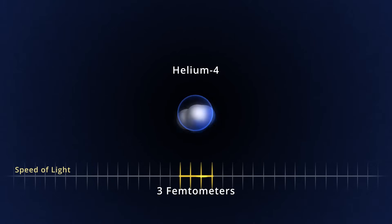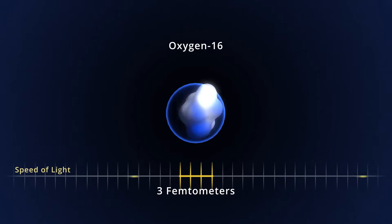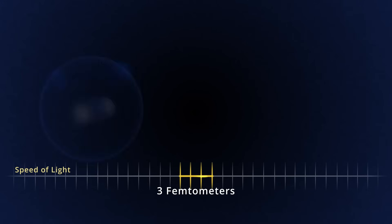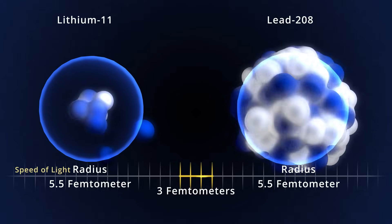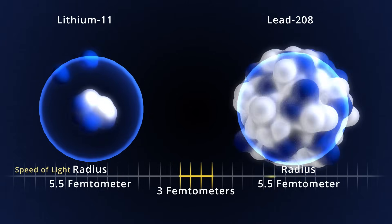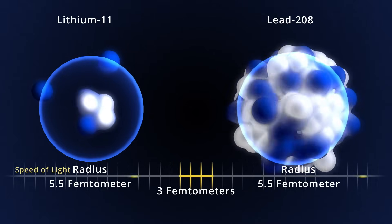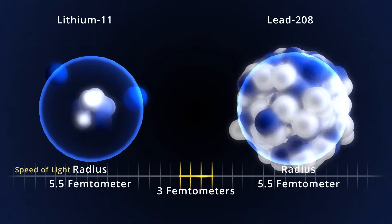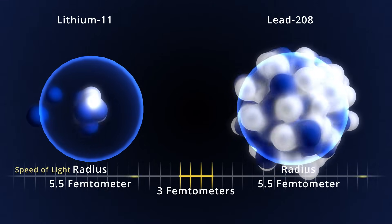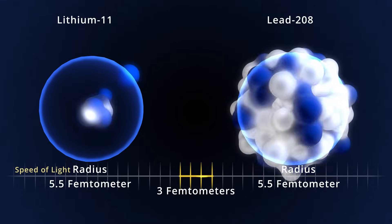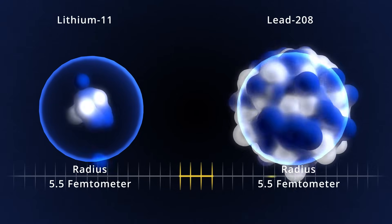The size of most nuclei grows with the number of protons and neutrons inside them, though there are striking exceptions. Lithium-11, with 3 protons and 8 neutrons, has a similar radius as lead-208, with 82 protons and 126 neutrons. Lithium-11 is called a halo nucleus, and can be visualized as a core with 2 additional neutrons circling in the periphery.